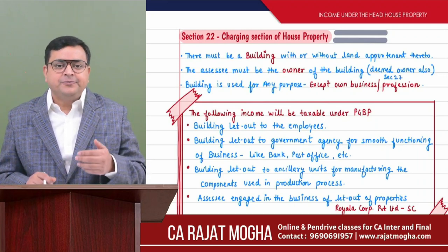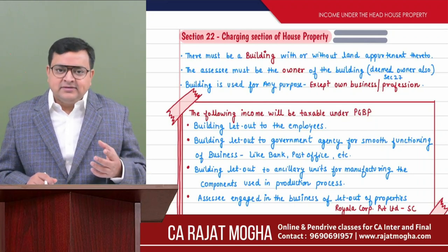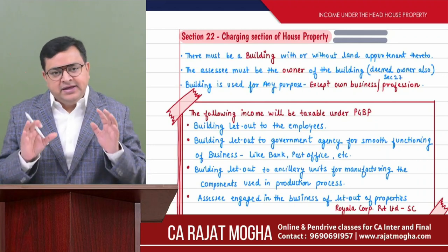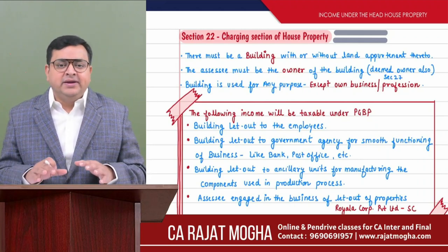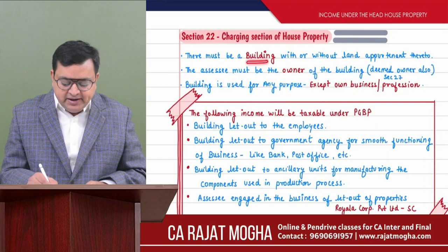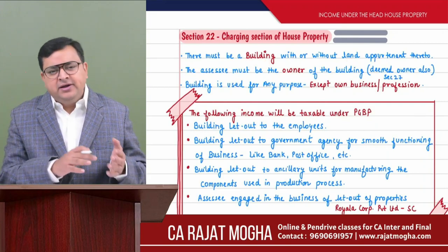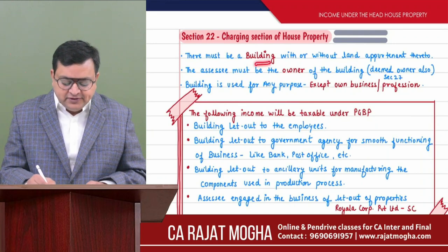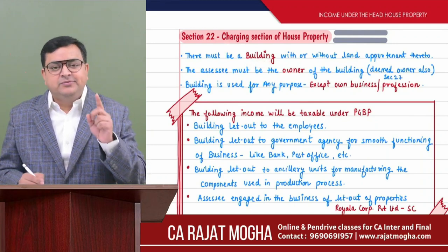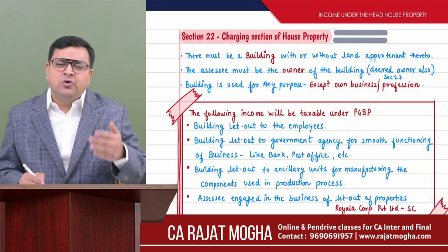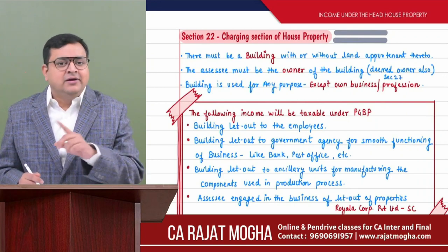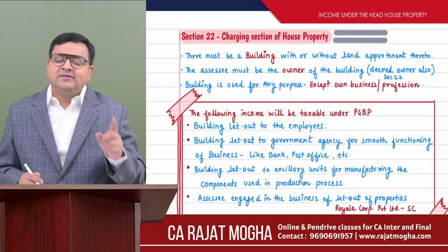If there is land attached to that building, we will keep it in house property. So there must be a building — with or without land, that's okay. But if it is entirely a vacant land, then IFOS applies. The charging section says there must be a building with or without land — that's fine. But if entirely vacant land, no — IFOS in that case.